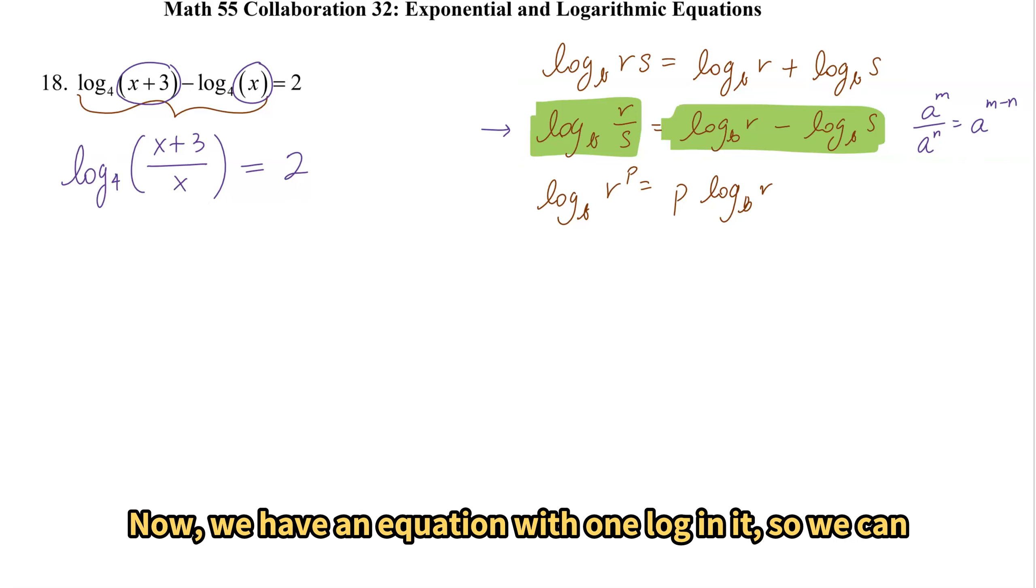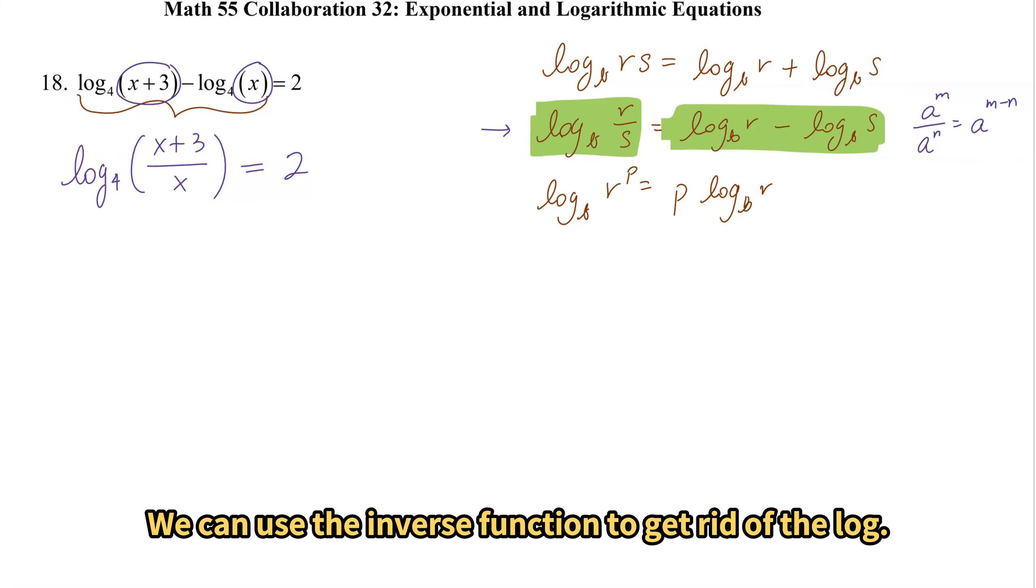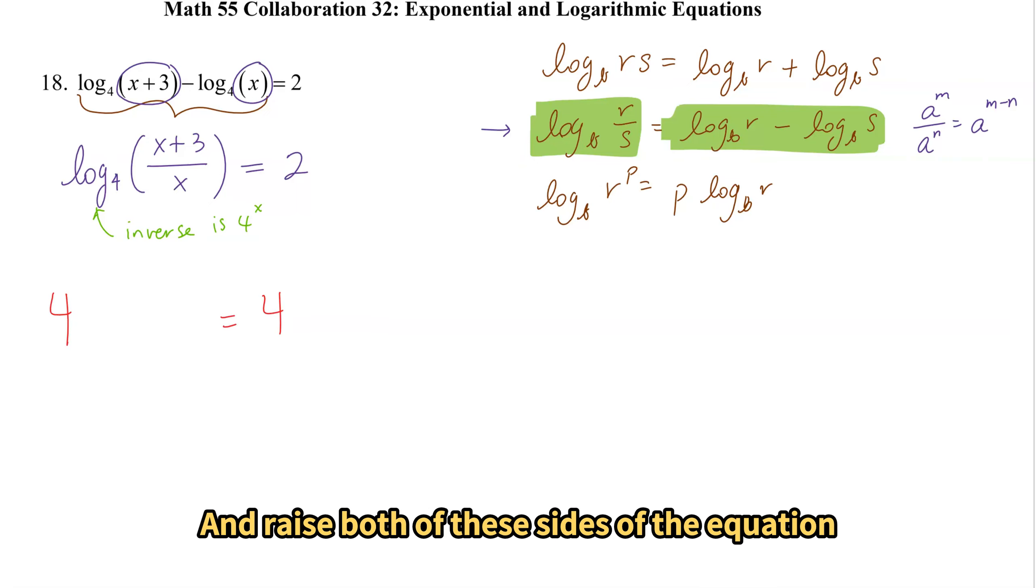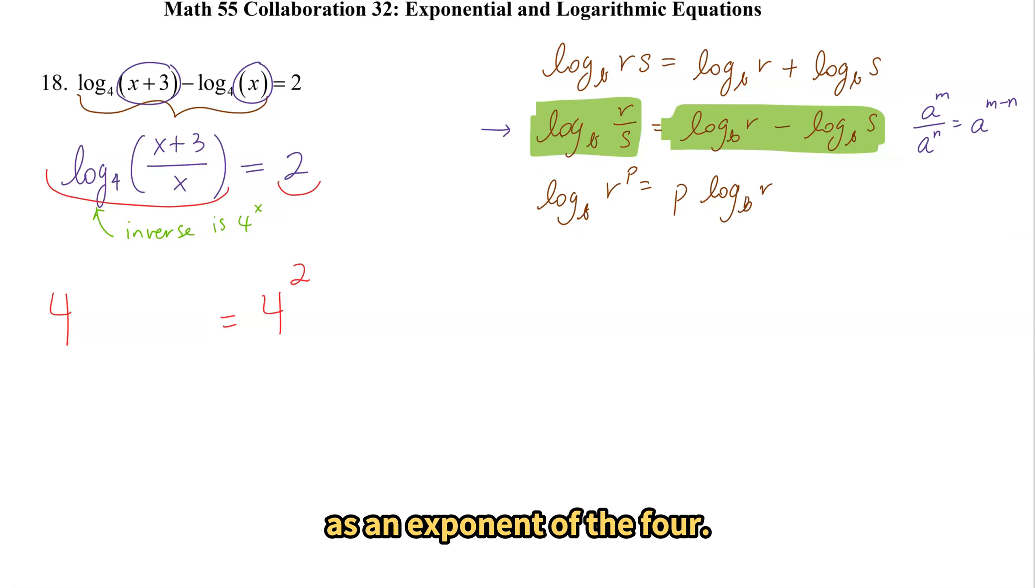Now we have an equation with one log in it. So we can use the inverse function to get rid of the log. The inverse of log base 4 is 4 to an exponent. So we're going to take 4 and raise both of these sides of the equation as an exponent of the 4.